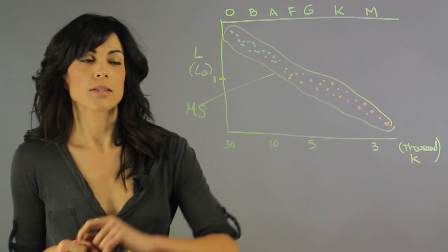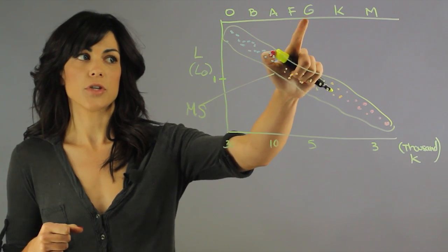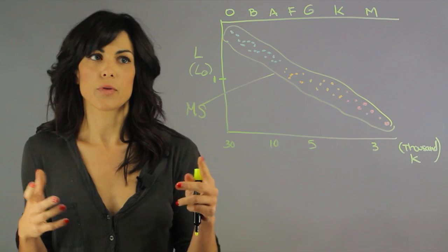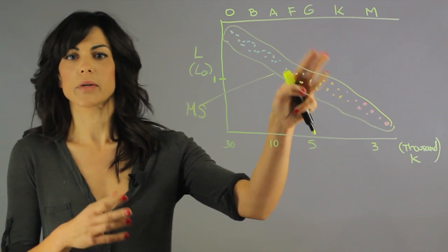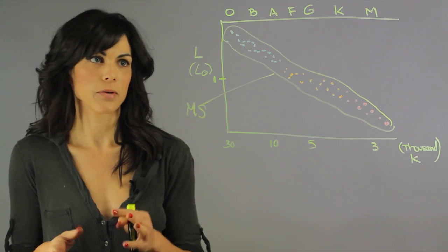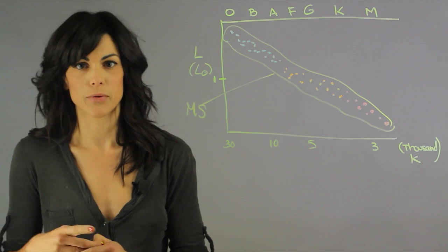Spectral classes go by O, B, A, F, G, K, M. A simple thing is O, B, a fine girl, kiss me, or there are several other sentences that people use to remember this.